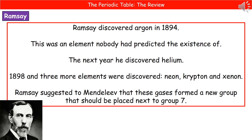The following year, in 1895, he discovered helium. Then in 1898, three more elements were discovered: neon, krypton, and xenon. Ramsey actually suggested to Mendeleev that these gases formed a new group that should be placed next to group 7. These elements hadn't been predicted in their existence because scientists were looking for things that reacted — and these, notoriously, do not react.